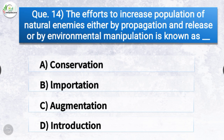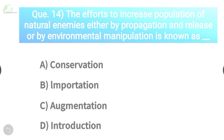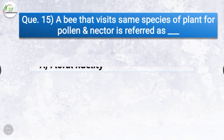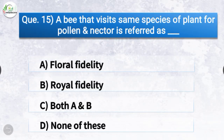Question number fourteen: The efforts to increase the population of natural enemies either by propagation and release or by environmental manipulation is known as? The correct answer is option C, augmentation — the efforts to increase the population of natural enemies by propagation and release or environmental manipulation is known as augmentation.